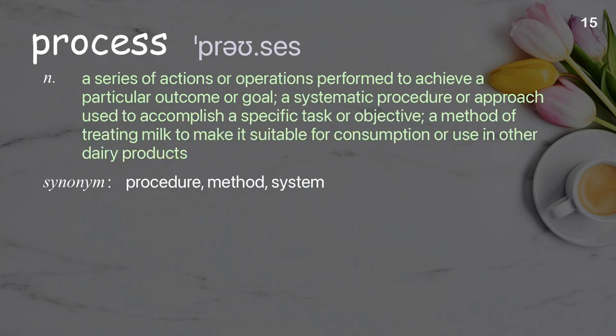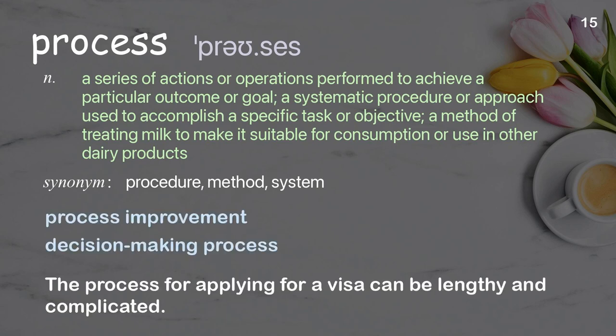Process: A series of actions or operations performed to achieve a particular outcome or goal; a systematic procedure or approach used to accomplish a specific task or objective; also a method of treating milk to make it suitable for consumption or use in other dairy products. Examples: Process improvement, decision-making process. The process for applying for a visa can be lengthy and complicated.